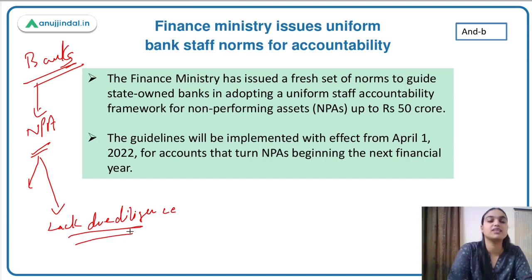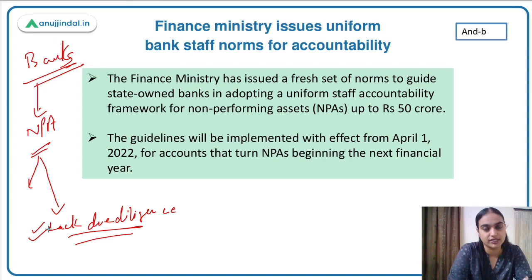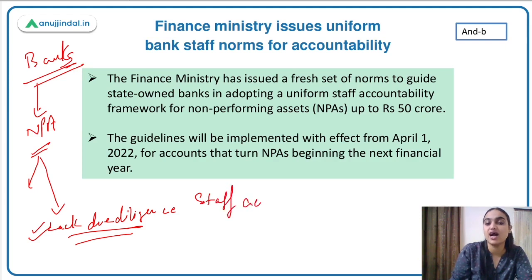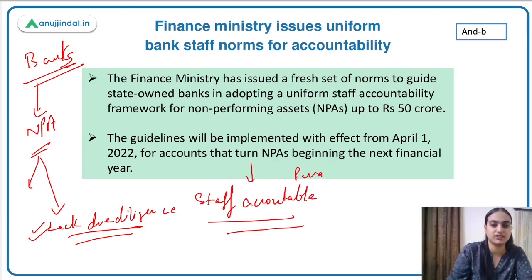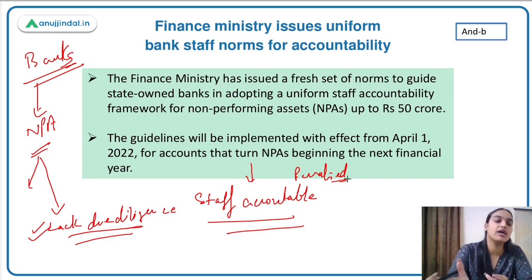When loans are sanctioned fraudulently or without proper attention to rules, it leads to losses for the overall system. In such cases, the staff who approved or sanctioned those loans are held accountable and penalized — amounts are deducted from their remuneration and retirement benefits are affected. However, the existing rules were leading to harassment of employees who had done nothing wrong; employees who had acted in good faith were also being punished.